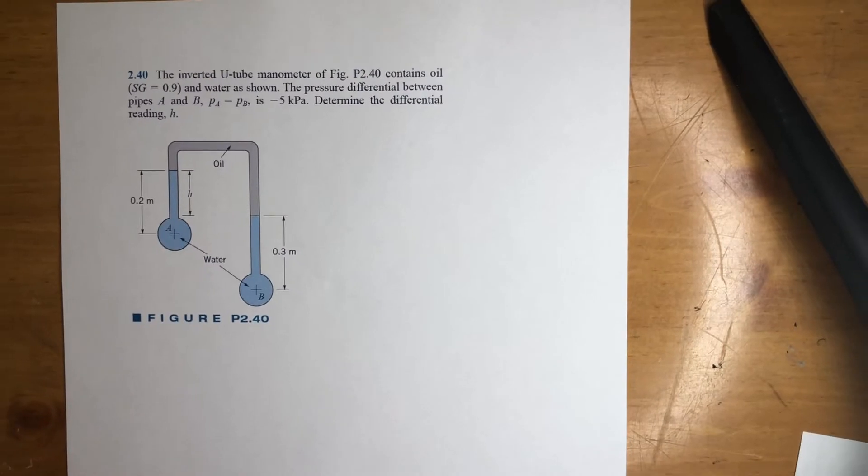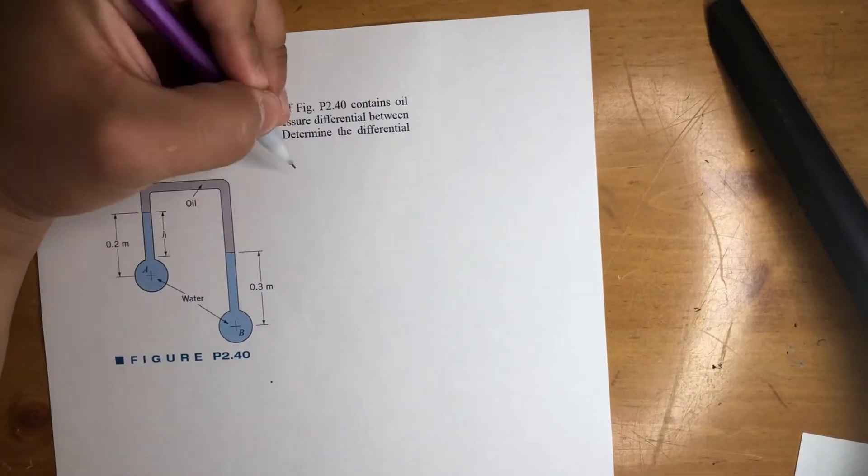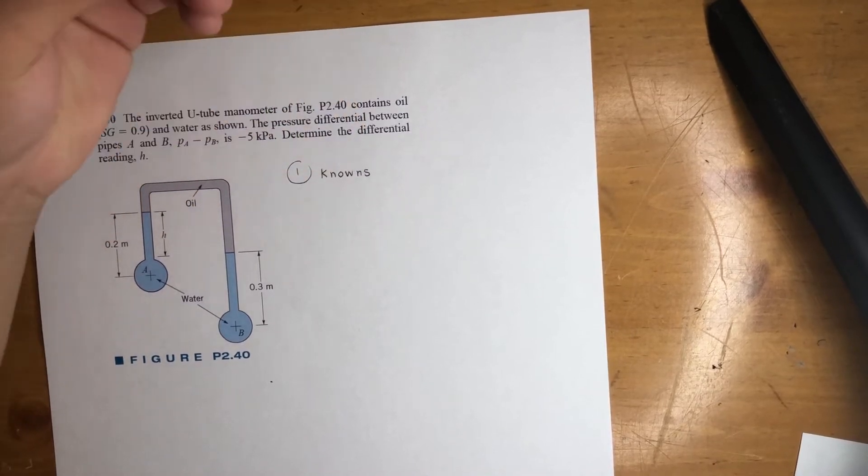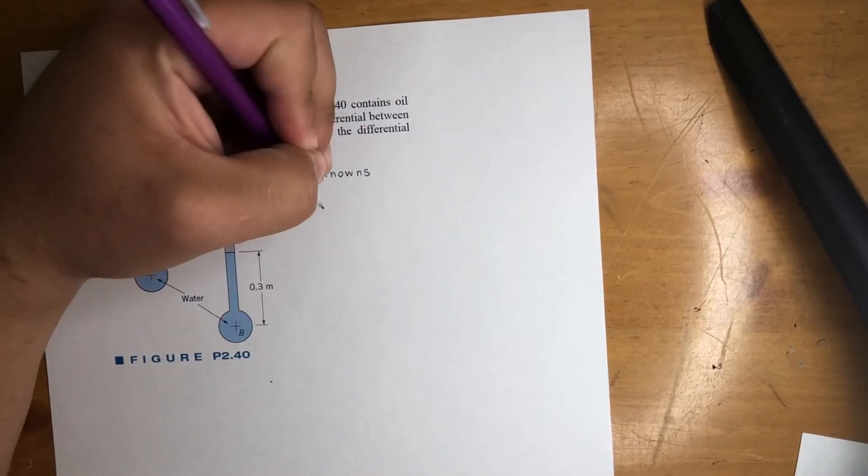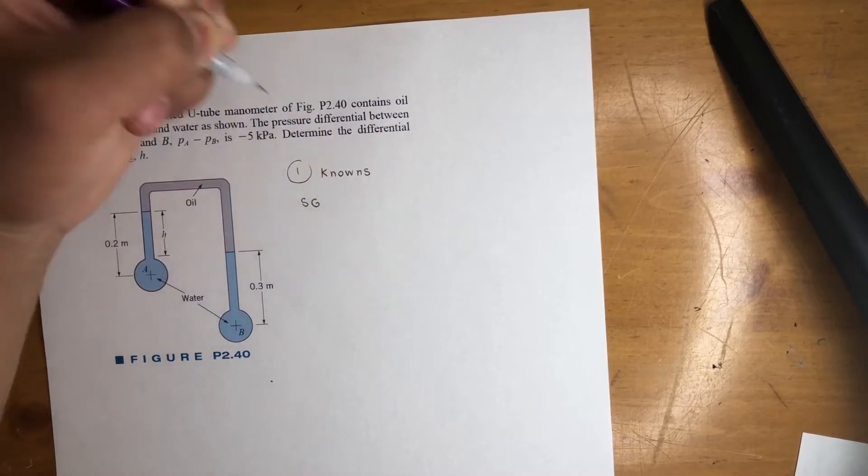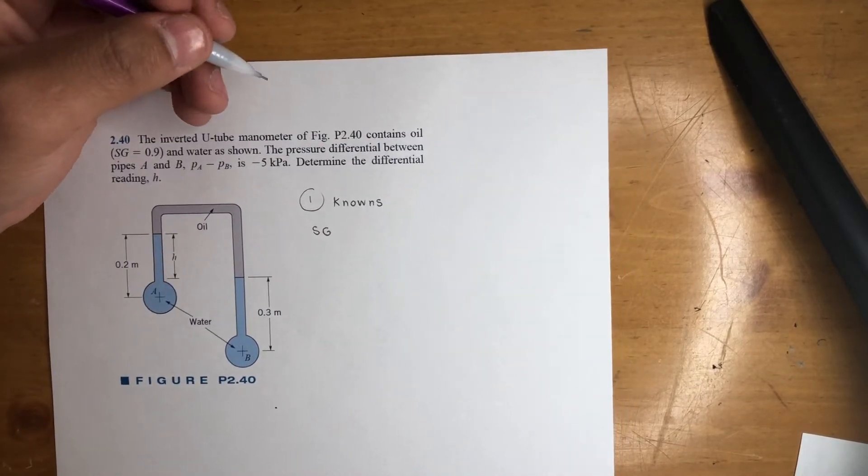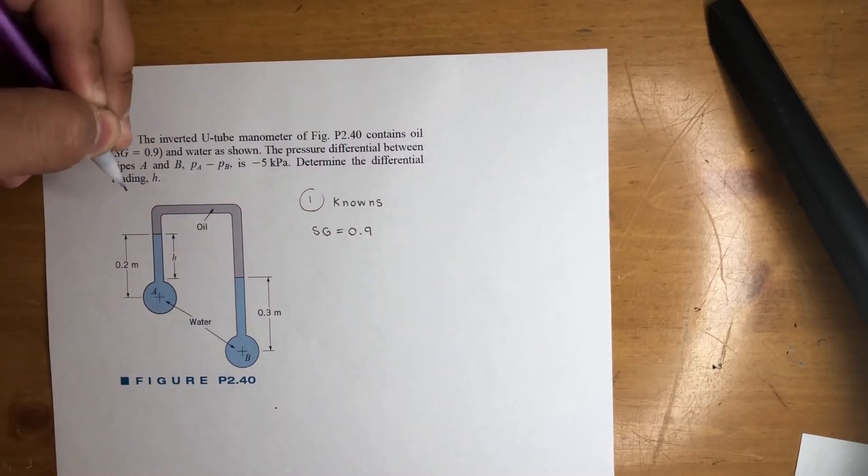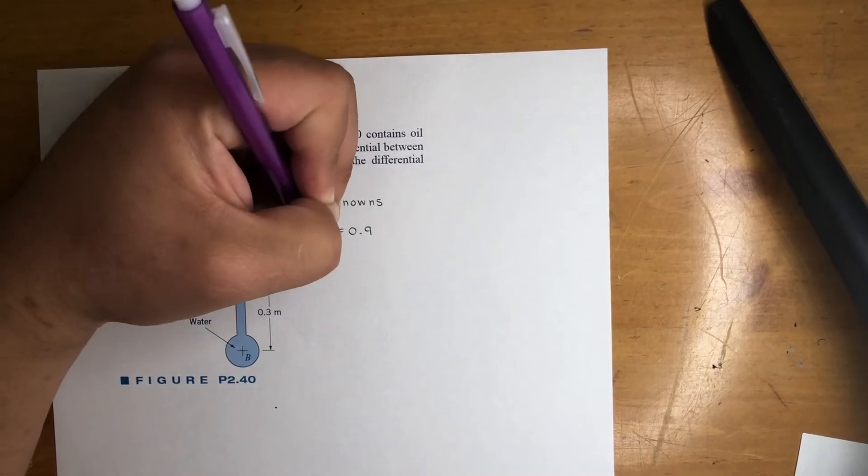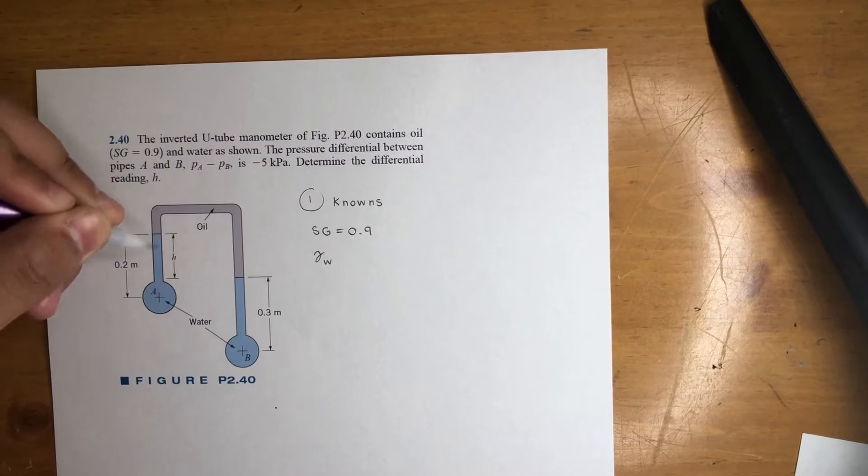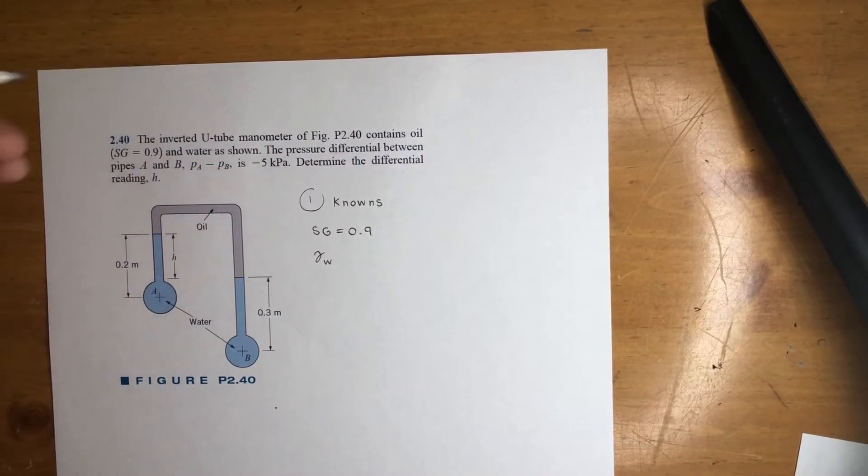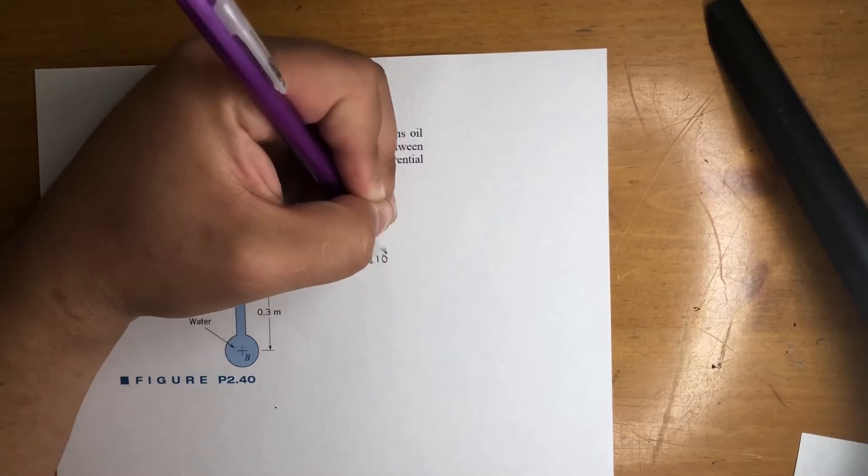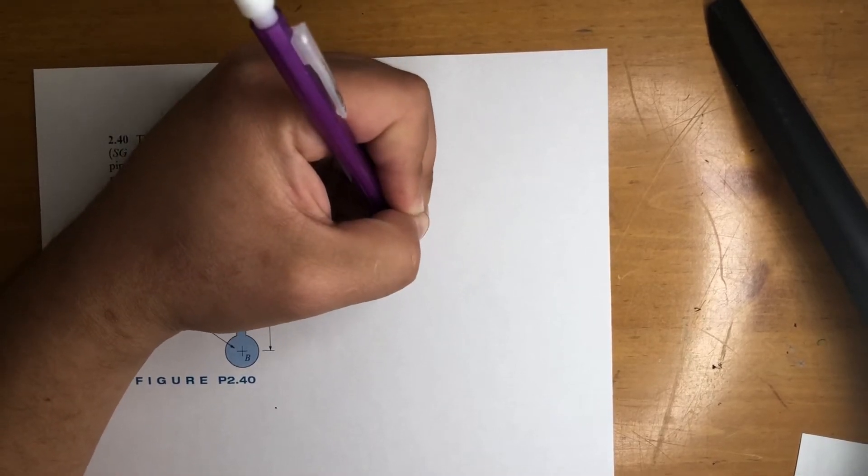All right, so first step, knowns. Let's see what we're dealing with here. We got a specific gravity they mentioned in the problem, that is 0.9. We're dealing with water. So gamma of water, we're working with meters and kilopascals, so that's going to be 9810 newton per meter cubed.